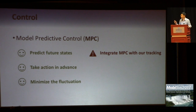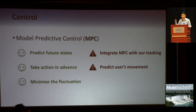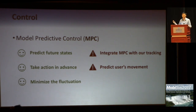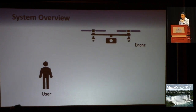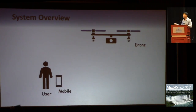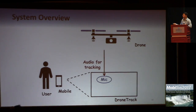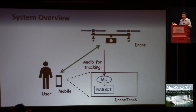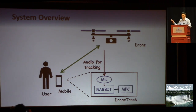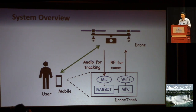To support MPC, we need to effectively integrate it with our tracking part. Also, previous MPC-based work let the drone follow a predefined trajectory. In our case, the drone can follow a user who can move arbitrarily. So in this case, we need to predict the user's movement to support MPC. The system is developed to compute how to move the drone to keep the desired distance and orientation, and the control command is sent back to the drone using Wi-Fi links.